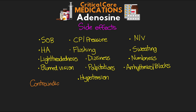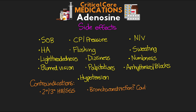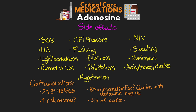It's important to know about some contraindications. This medication should not be used in patients who already have 2nd or 3rd degree heart block or sick sinus syndrome. Other receptors that adenosine impacts can also lead to bronchoconstriction, so we want to use this cautiously in patients with obstructive lung disease. It can also increase the risk for seizures, and it should not be used in patients with signs and symptoms of an acute MI. We also want to be careful in patients who cannot tolerate the potential hypotension associated with it.